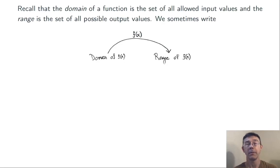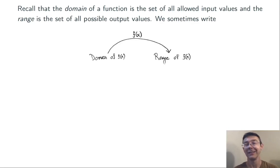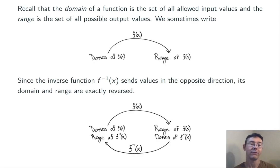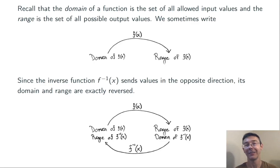Let's talk about domain and range for a minute. Remember, the domain of a function is the set of all allowed input values, and the range is the set of all possible output values from that function. A lot of times we'll draw an arrow diagram and envision f sending values from the domain by that arrow to the range of f. When we have an inverse function, the arrow just gets reversed. So the domain of f of x is the range of f inverse of x, and the range of f is the domain of f inverse. In shorthand, the domain and the range are exactly reversed.